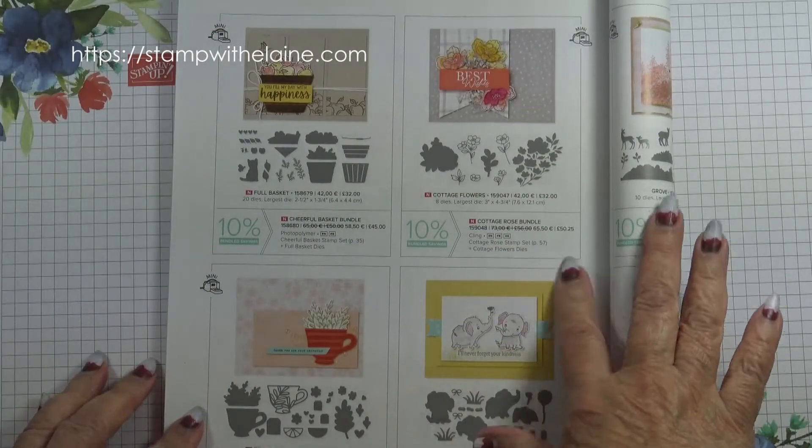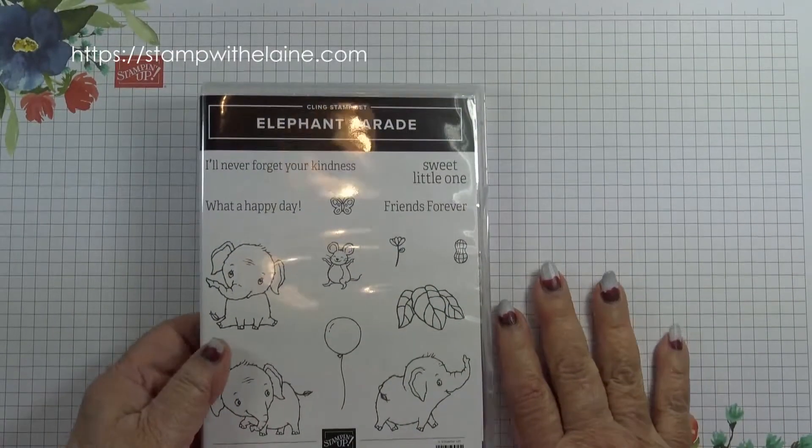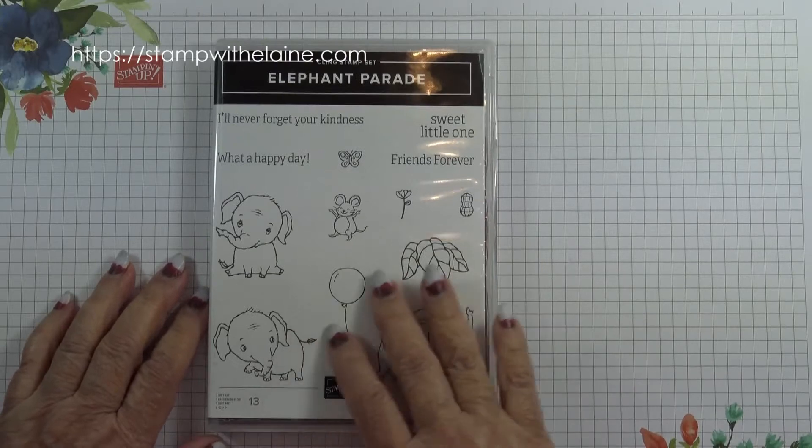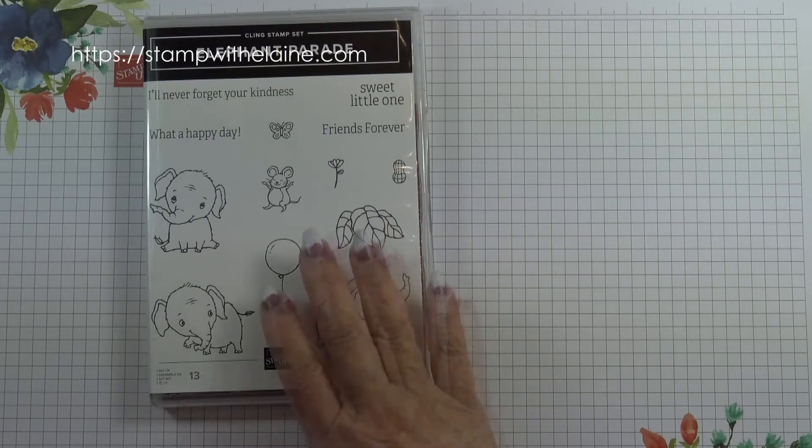They're designed so that they can go through the mini die cutting machine. So I went back to the drawing board and thought it would make quite a sweet little box using this elephant parade bundle.